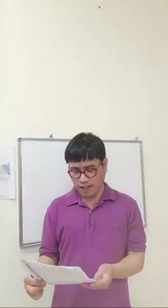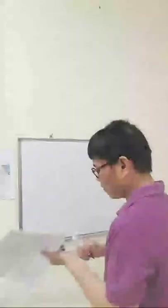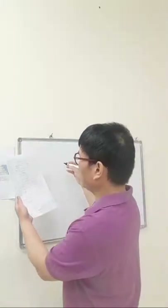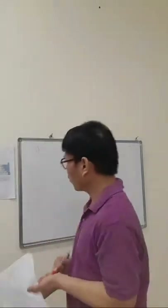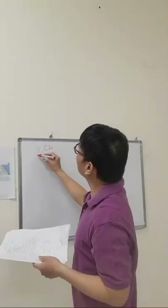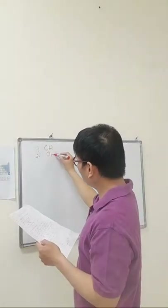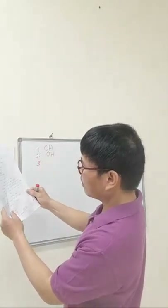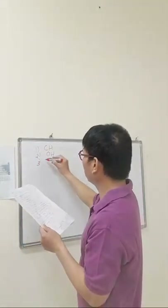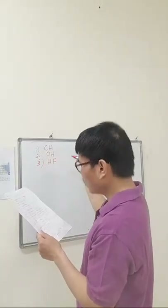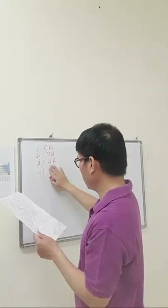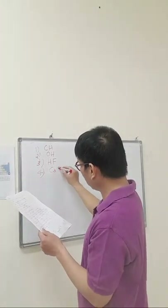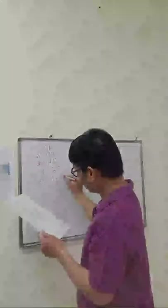Determine what kind of chemical bond. I'll give ten examples. Number one: CH (carbon-hydrogen). Number two: hydroxyl functional group (OH). Number three: hydrofluoric acid (HF). Number four: calcium sulfide. Number five: magnesium oxide. Number six: chlorine gas.